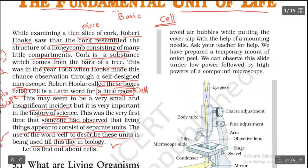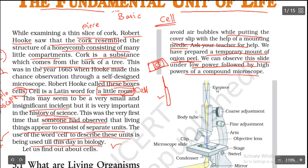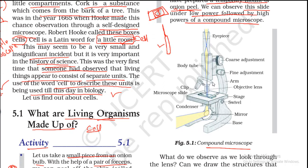Take care to avoid air bubbles while placing the cover slip. Use a mounting needle — a handle with a thin needle — to gently lower the cover slip and prevent bubbles from forming. This completes the preparation of a temporary mount of the onion peel. Now observe this slide under low power followed by high power of a compound microscope.